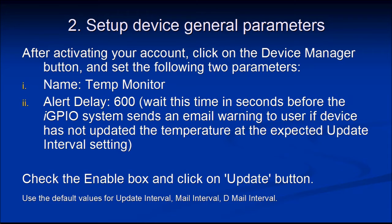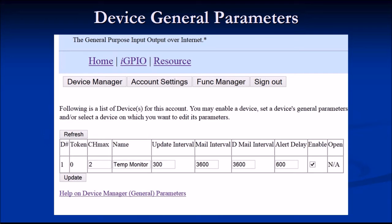Check the enable box and click Update, and you will see the general parameters for device number one. On the far right there is an NA shown, but when you do this yourself it will be a clickable link that opens up the device-specific parameters.